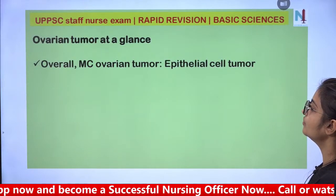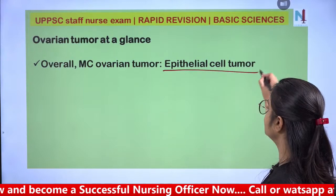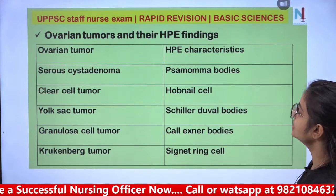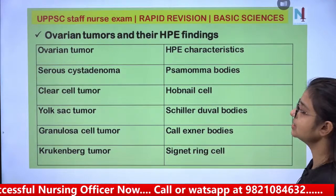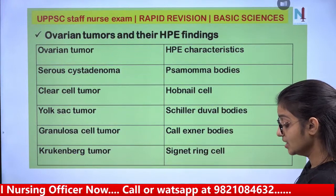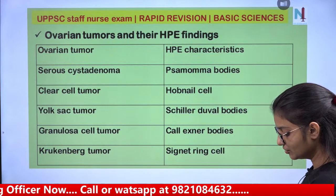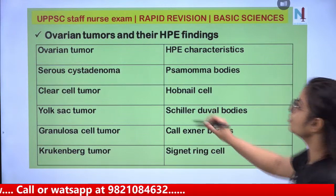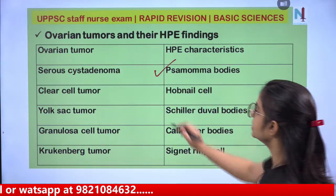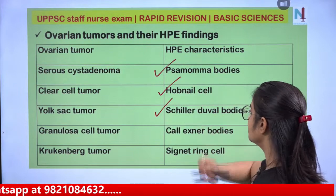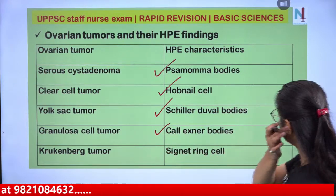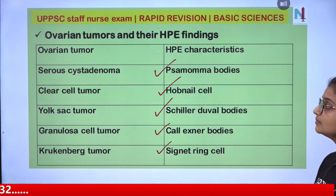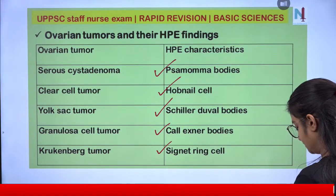Overall most common ovarian tumor is epithelial cell tumor. Key findings in ovarian tumors: serous cystadenoma — psammoma bodies; clear cell tumor — hobnail cells; yolk sac tumor — Schiller-Duval bodies; granulosa cell tumor — Call-Exner bodies; Krukenberg tumor — signet ring cells. These must be remembered as direct questions are asked on them.